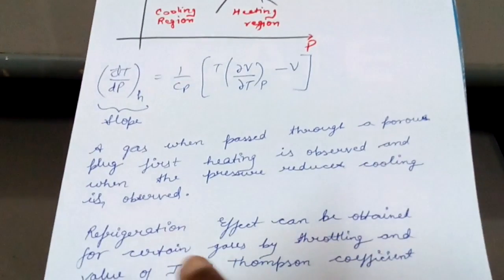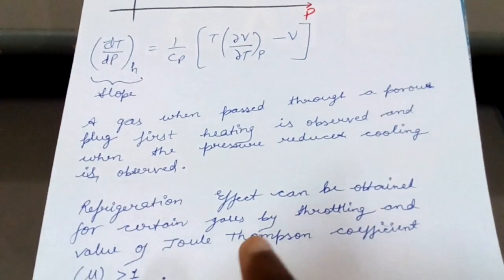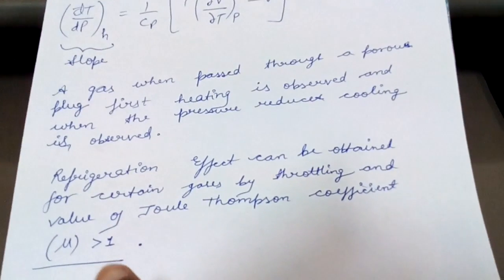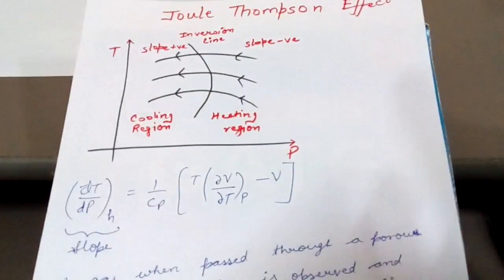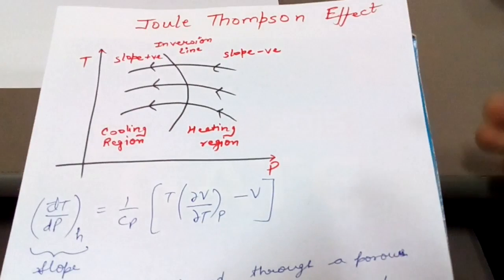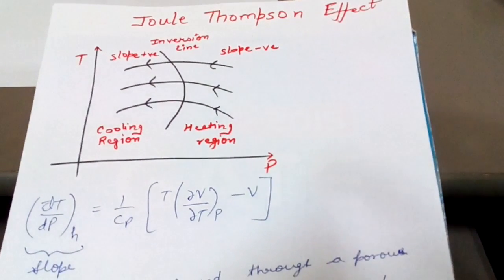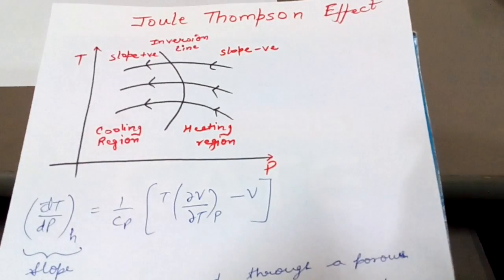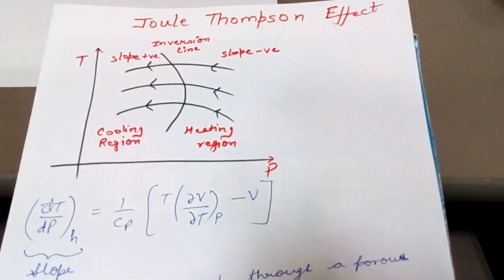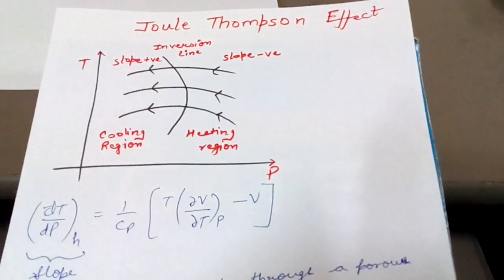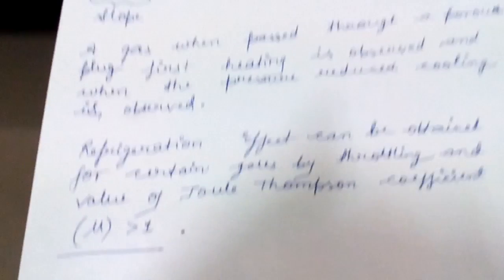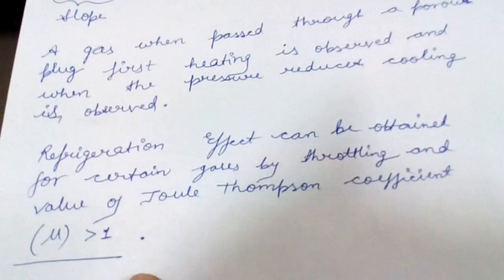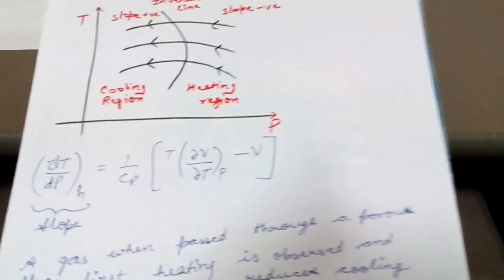Now refrigeration effect can be obtained for certain gases by throttling, and value of Joule-Thompson coefficient should be greater than 1. For certain gases we can enhance or use this effect to obtain refrigeration. Only those gases which have the Joule-Thompson coefficient greater than 1. Joule-Thompson coefficient is denoted by mu.